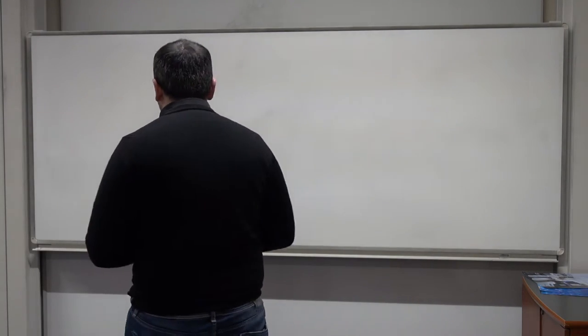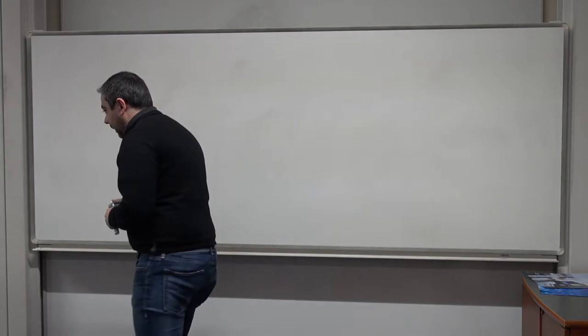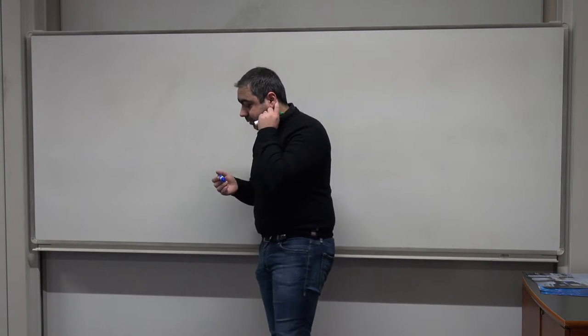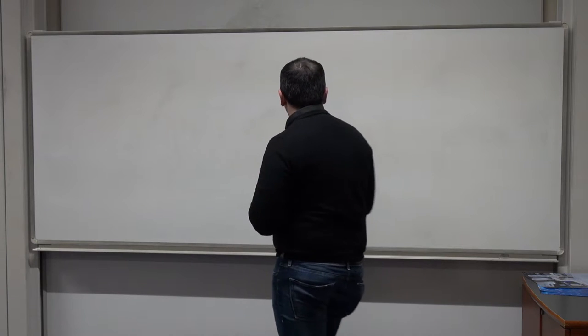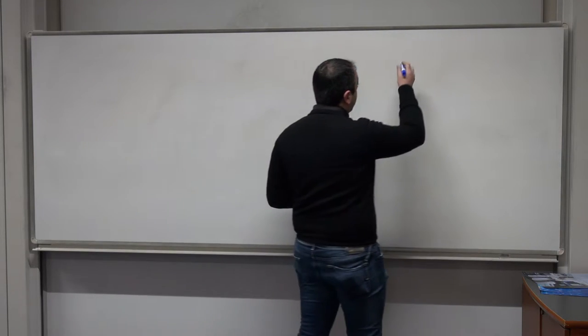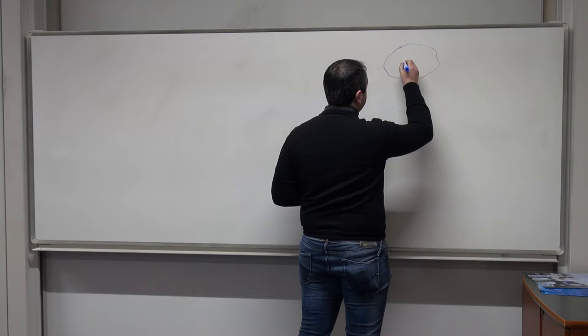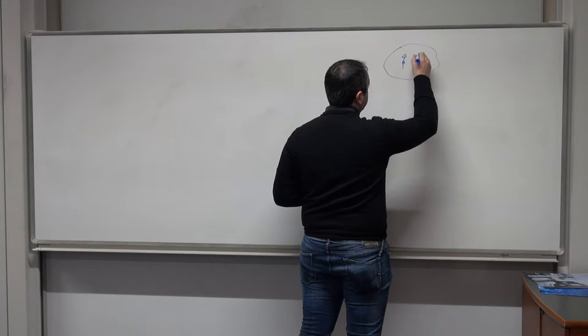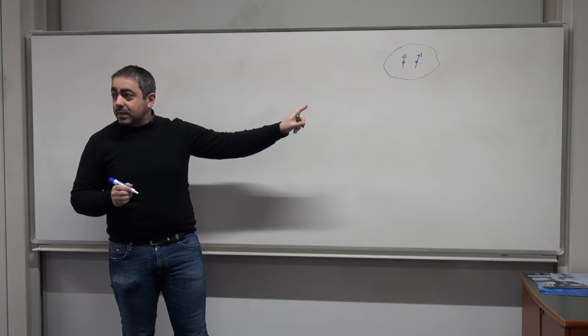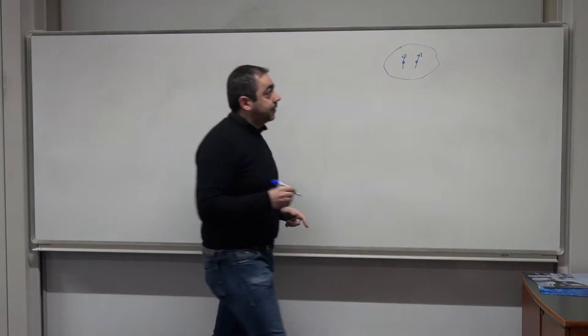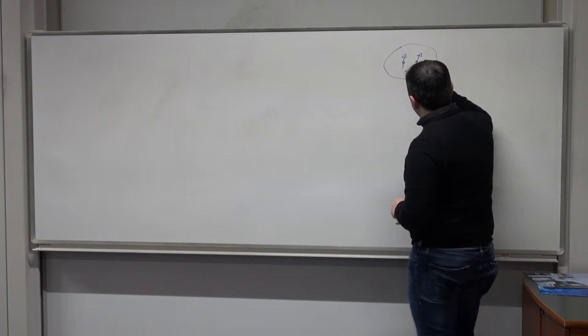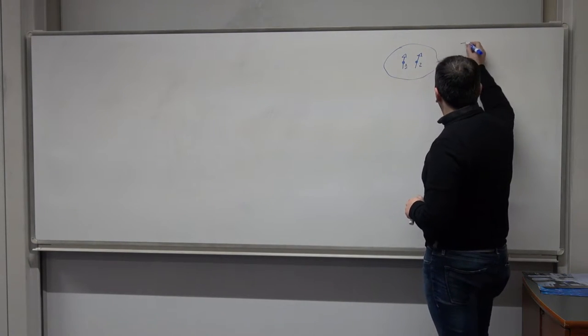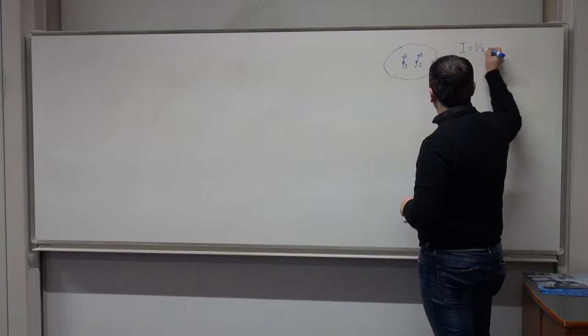Let's focus on today's lecture. I will start with some general assumptions valid throughout the course. From now on, I'm going to restrict myself to this peculiar case in which we have a spin system made by two spins one-half — spin one and spin two, both with total spin number one-half.